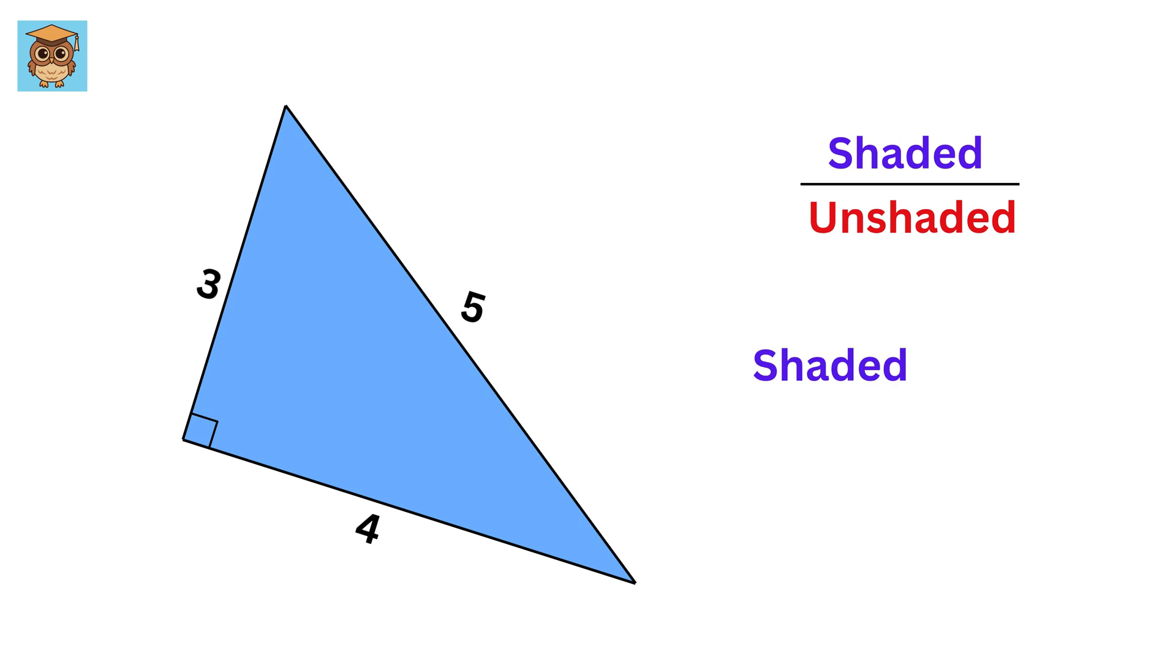To find the area of this triangle, we use the formula for the area of a triangle, which is half of the base multiplied by the height. In this case, the base of the triangle is three and the height is four. Substituting these values into the formula, the area becomes half of three multiplied by four or six square units. Great!